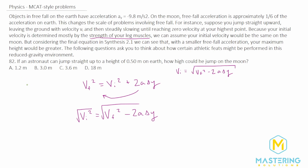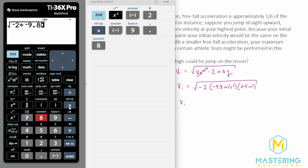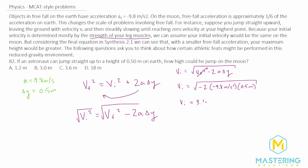Making a list of the variables: the acceleration on Earth is negative 9.8 meters per second squared, and the delta y on Earth for the astronaut jumping is half a meter. Plugging those in, the final velocity squared is zero. So we have the square root of negative 2 times negative 9.8 meters per second squared times a delta y of positive 0.5 meters. This gives us an initial velocity on Earth of 3.13 meters per second.